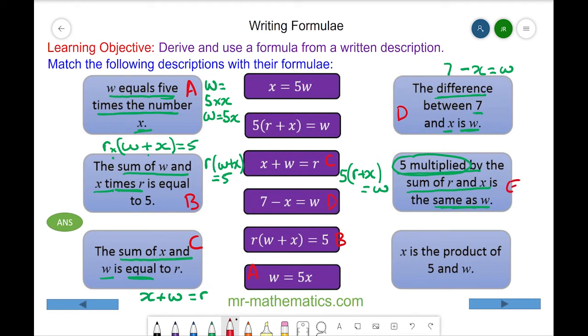And finally, x is the product. Now product in maths means multiply, so x is the product of 5 and w, 5 times w. So x is equal to 5w. We'll call this one F, and this one F. Thank you for watching, I hope you found that useful.